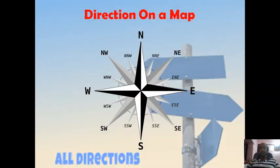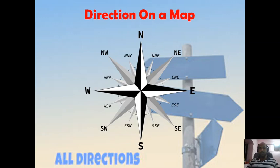Directions on a map: there are four cardinal or primary directions — north, south, east, and west. In between these primary directions there are intermediate directions — northwest, northeast, southwest, and southeast. So in total there are eight main directions: four cardinal directions and four intermediate directions.